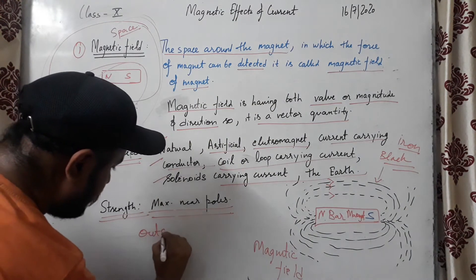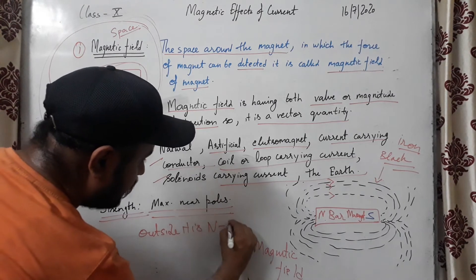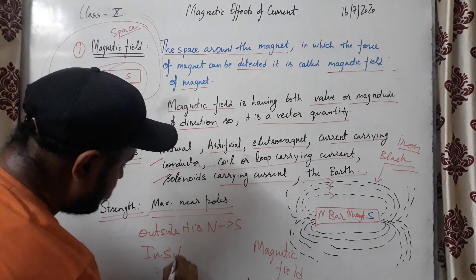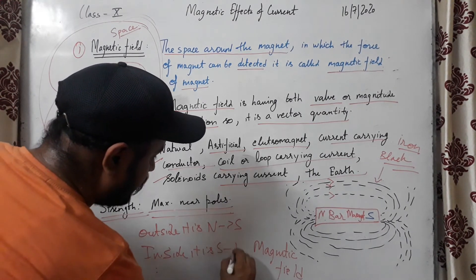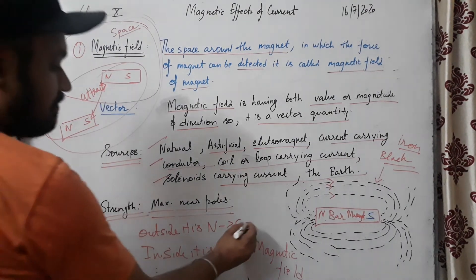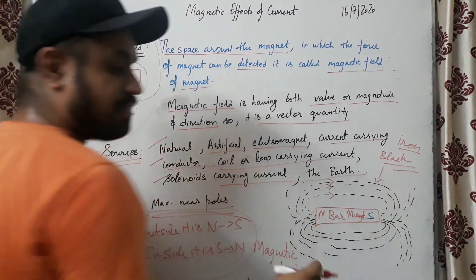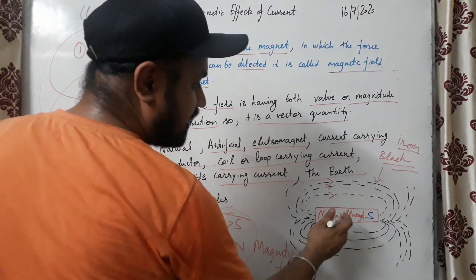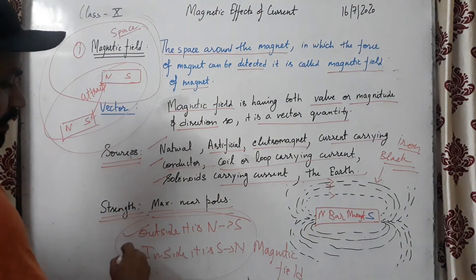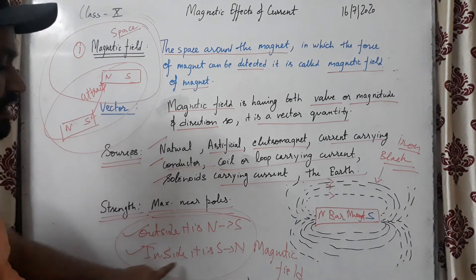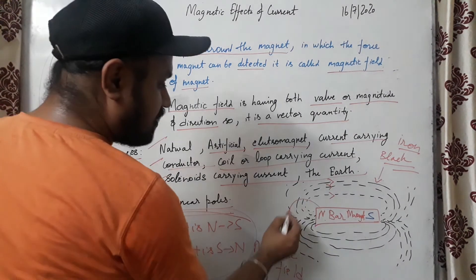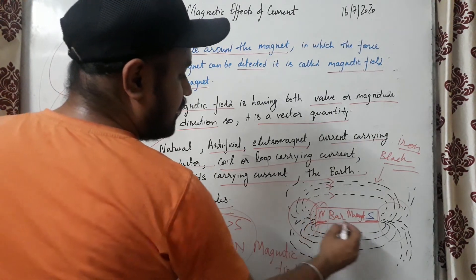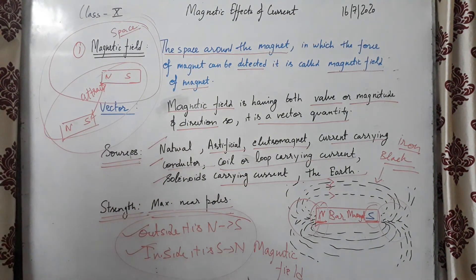Always remember: outside the magnet the field direction is north to south, and inside the magnet it is south to north. This is the magnetic field line pattern. The iron filings align in this definite pattern because outside they align north to south and inside south to north, with maximum strength near the poles. The north pole is indicated by red color and the south pole is indicated by blue color.